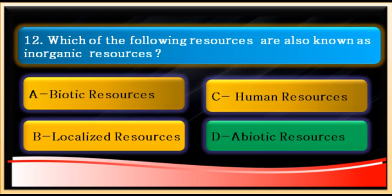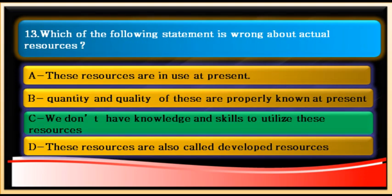Inorganic resources are also called abiotic or non-living resources — like air, soil, water, minerals, iron, copper, silver, and gold. These are all inorganic resources.